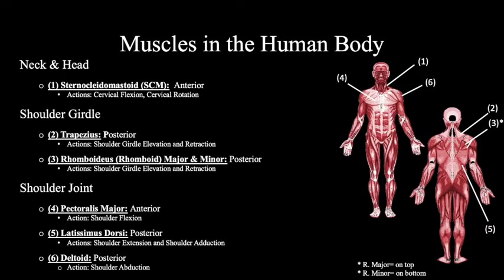For the next four slides, you will be referencing the images on the right-hand side to see where on the body the muscles are located. The muscles are numbered and labeled for easier identification. Starting off, we will be talking about one muscle in the neck and head region called the sternocleidomastoid, or the SCM, which is located on the anterior side of the body. Its actions are to flex and rotate the head.